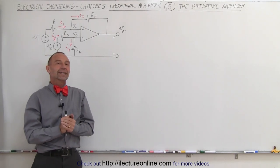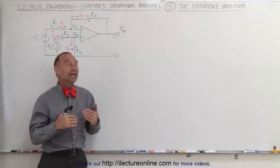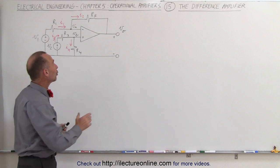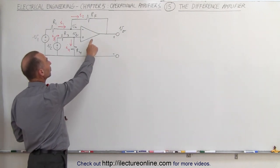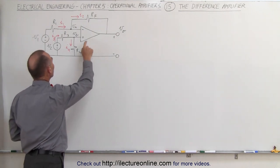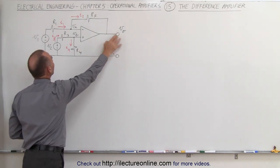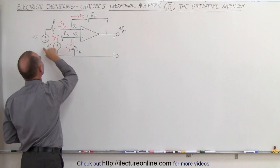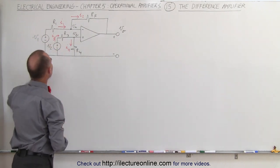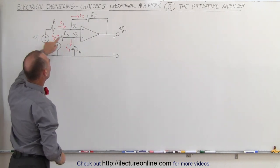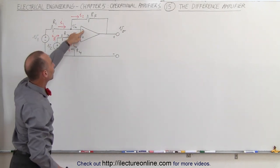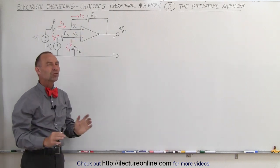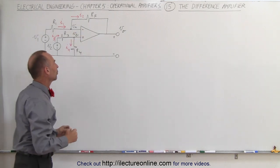Welcome to Electron Line. Now we're going to take a look at the difference amplifier. We're able to hook up an operational amplifier in such a way that the output voltage is a function of the difference between V1 and V2, the input voltages to the inverting terminal and the non-inverting terminal. Let me show you how that works.